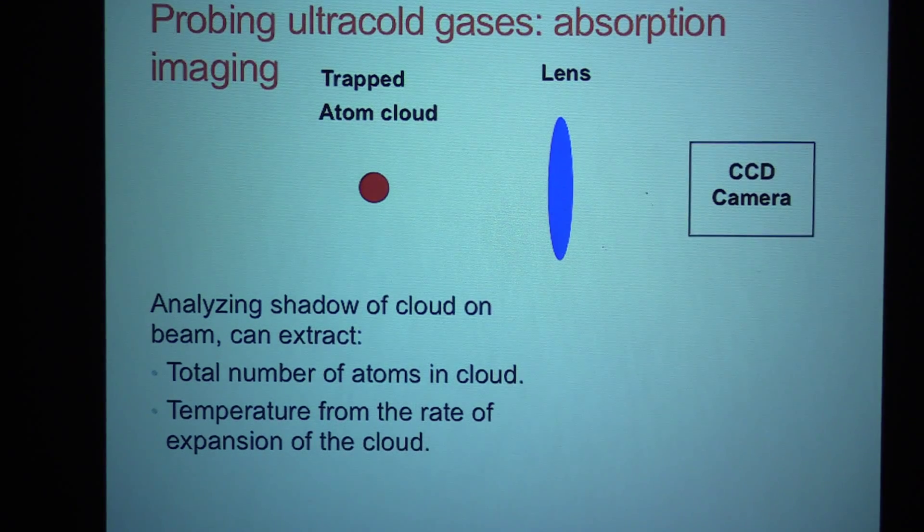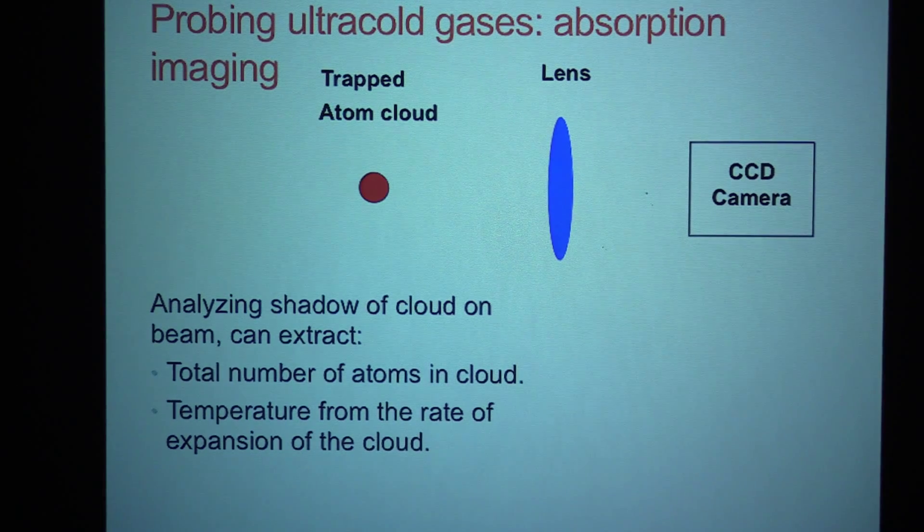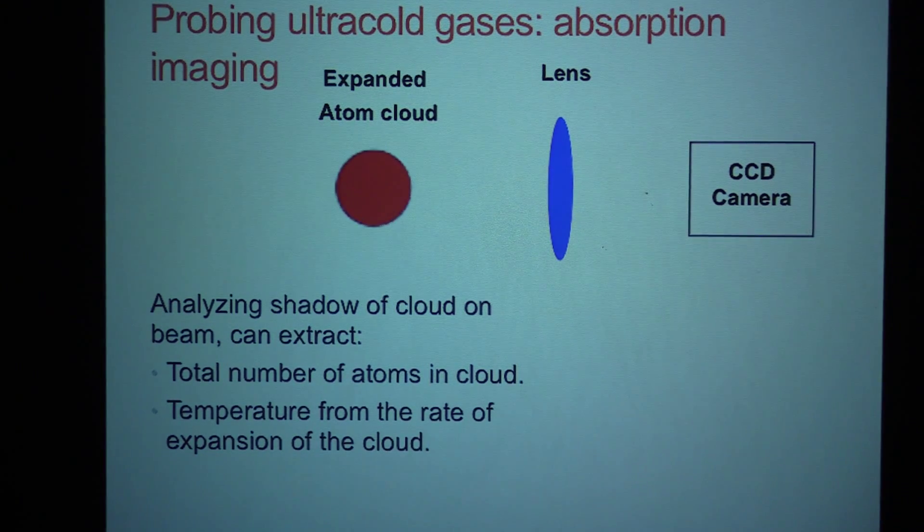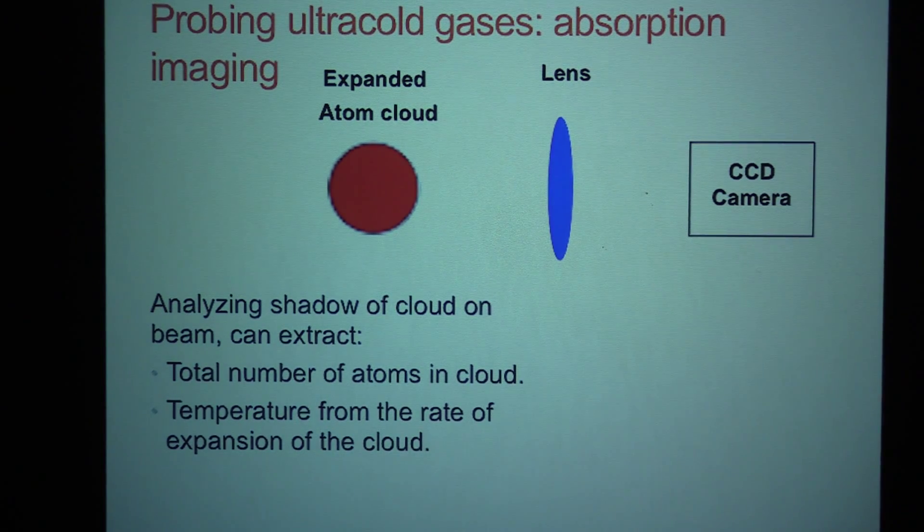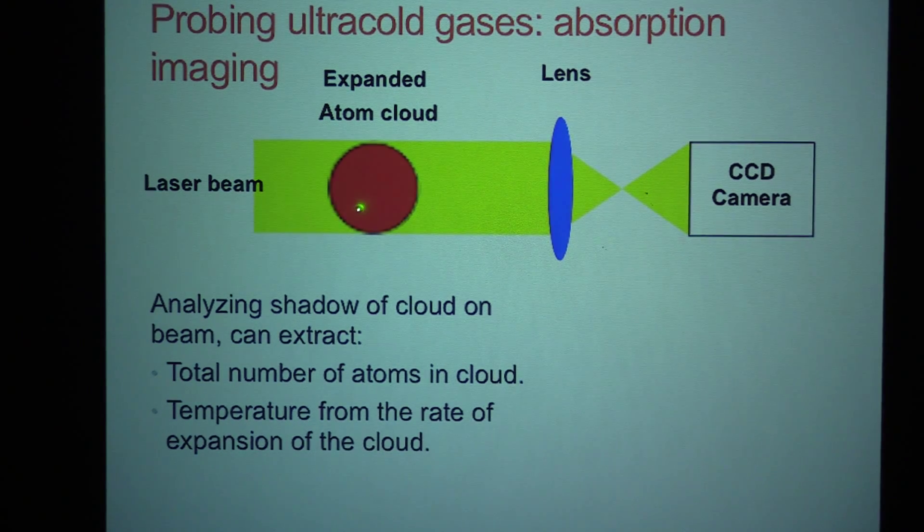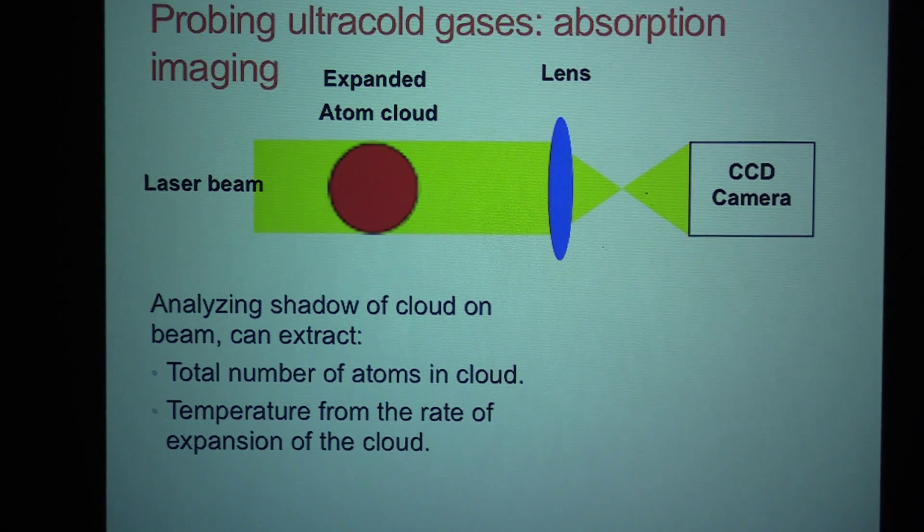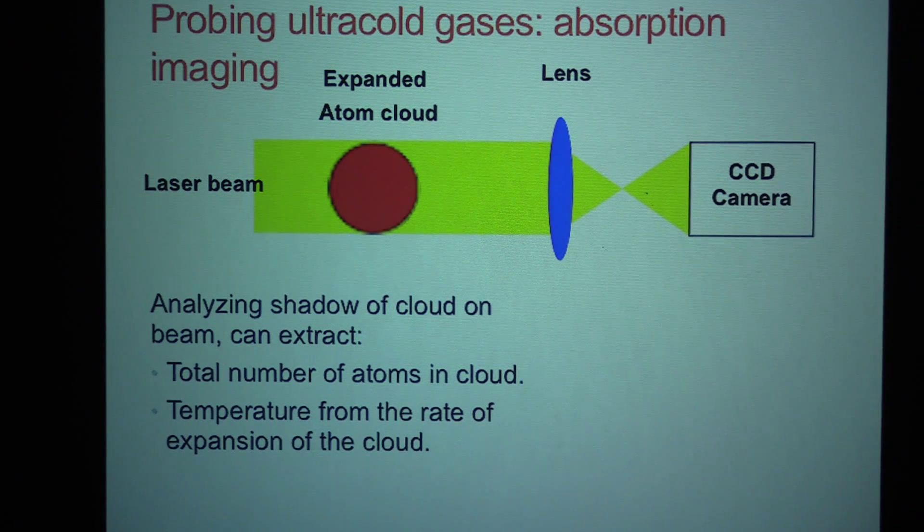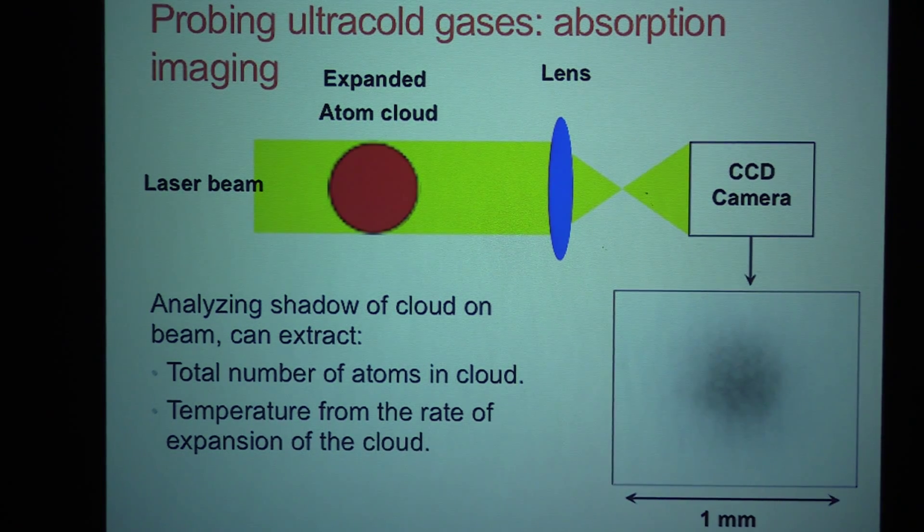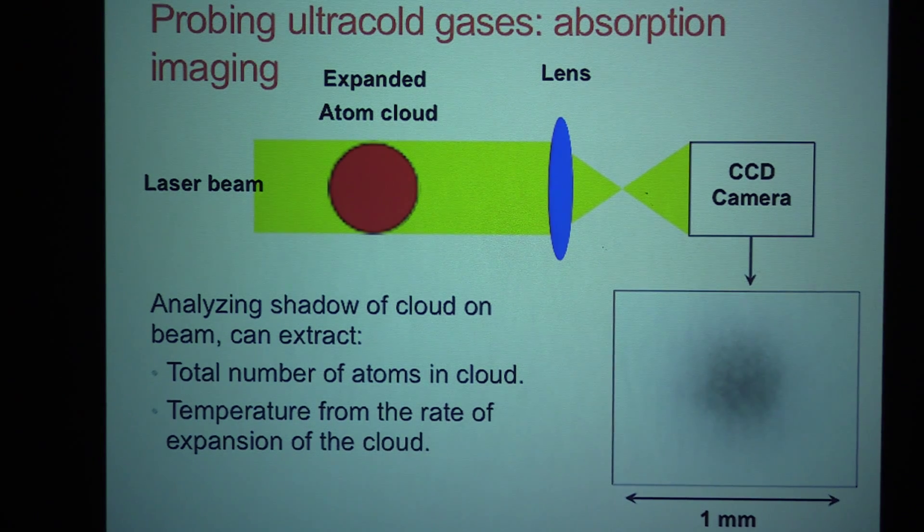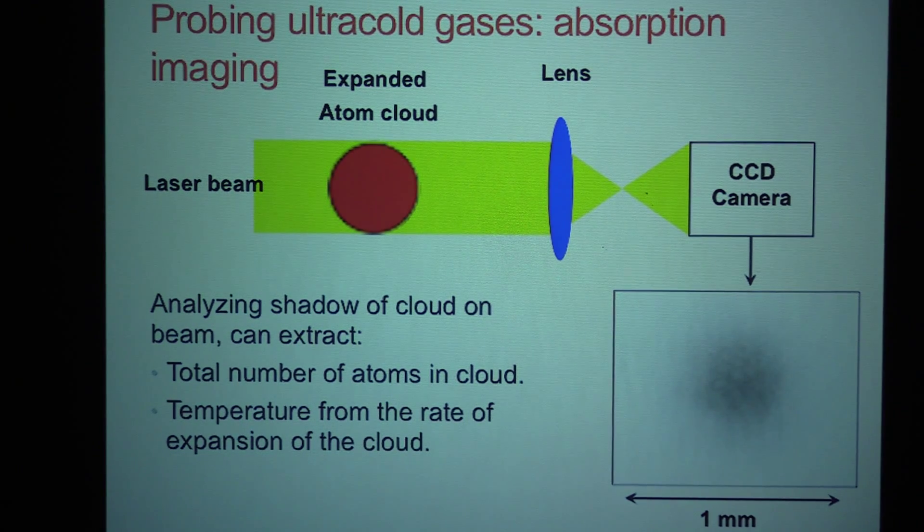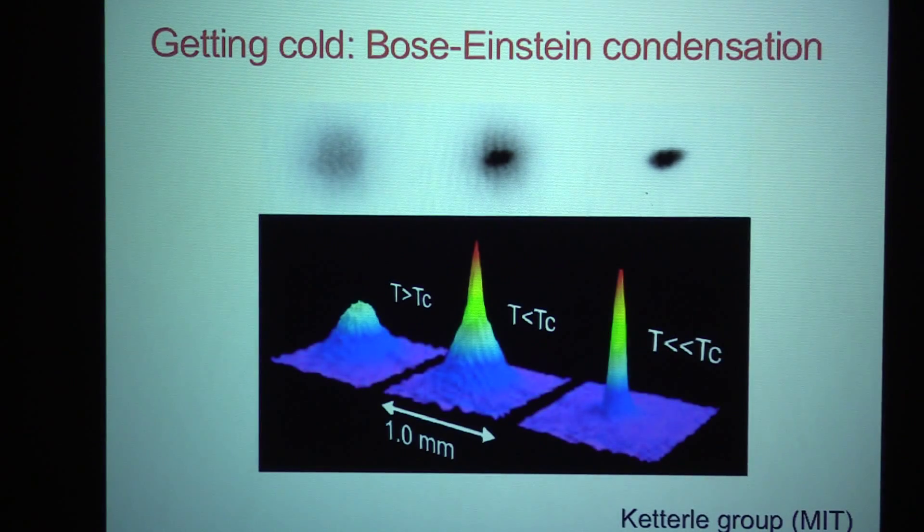So you might ask, how do you observe the Bose-Einstein condensate? Well, it's quite simple, actually. What you do is you start with the atoms in the trap, and you release them. Okay, so here's the trap cloud, and we just let it expand. We switch off the light. So once they expand, we can shine a resonant light beam at the atoms. And the photons, the atoms scatter away some photons from this beam and cast a shadow. And this shadow can be imaged onto a camera. So here it is. From this shadow, we can extract information about the number of atoms, knowing the cross-section of the scattering of the photons. We can also extract information about the temperature of the cloud, knowing how fast the cloud is expanding. So we can basically characterize the essential quantities in this cloud.